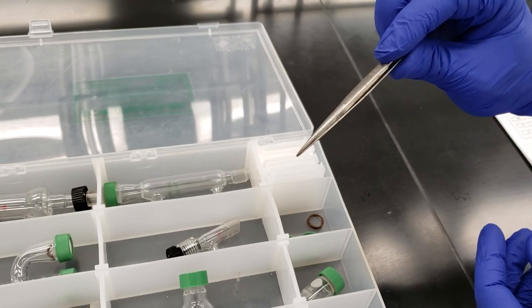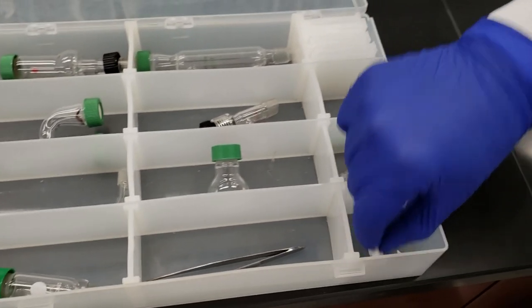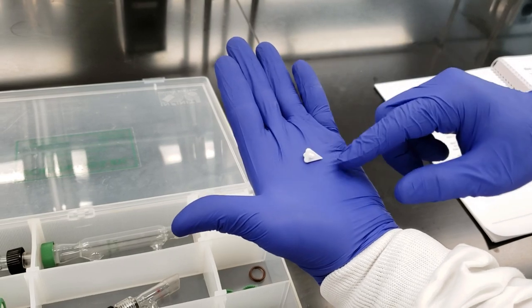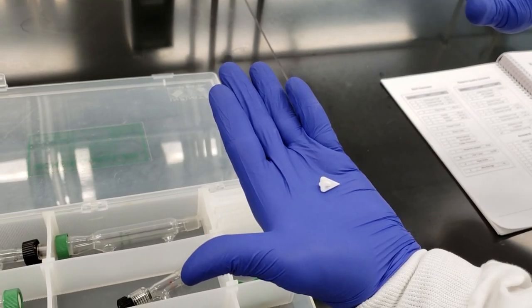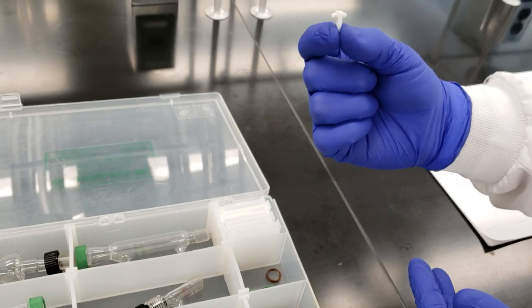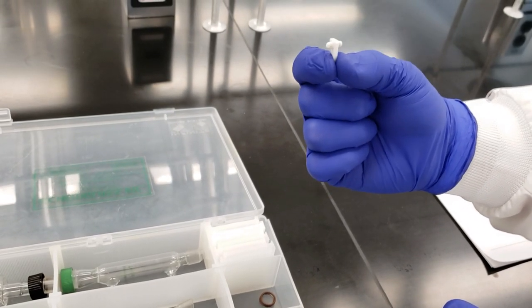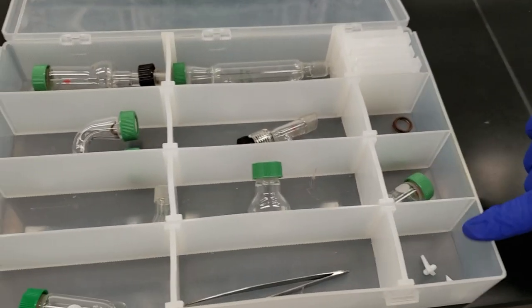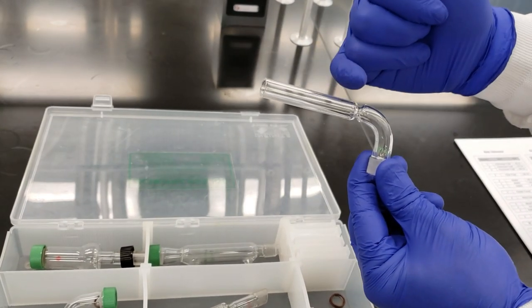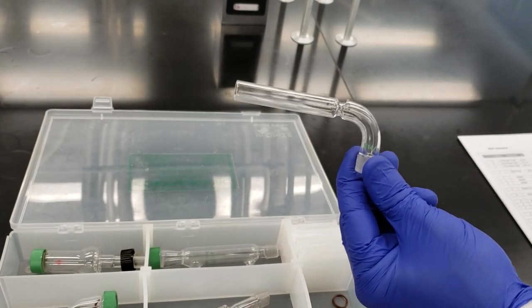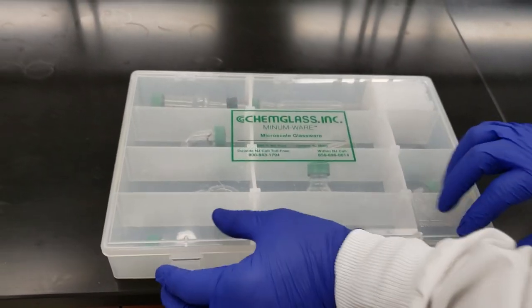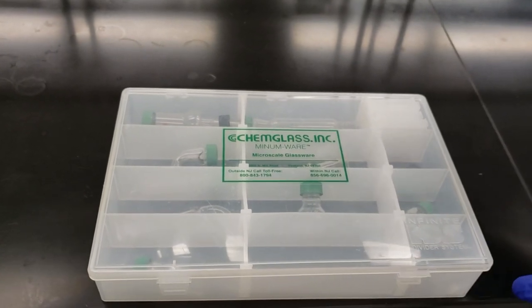We have tweezers or forceps. We have two spin vanes, magnetic spin vanes that you put into a reaction vessel. Set them on a stirring plate or hot plate and they'll stir the solution automatically. These are invaluable but very tiny and tend to go missing, so pay attention to where you put them. Last is our drying tube, which we can pack with cotton and a drying agent to keep moisture out of reactions if necessary. That's all the glassware in your lab station.